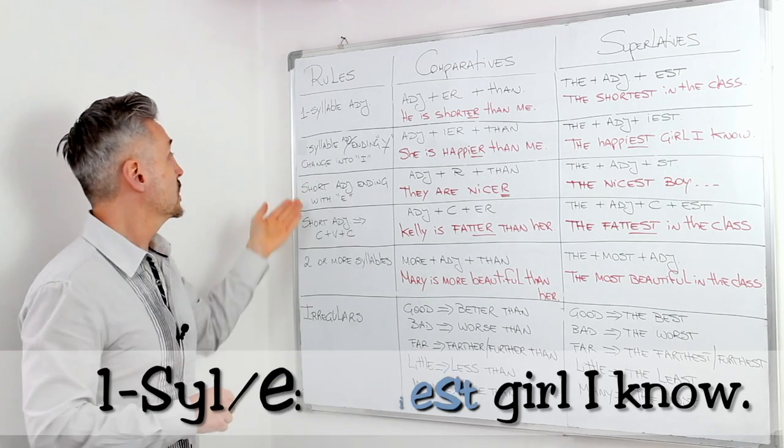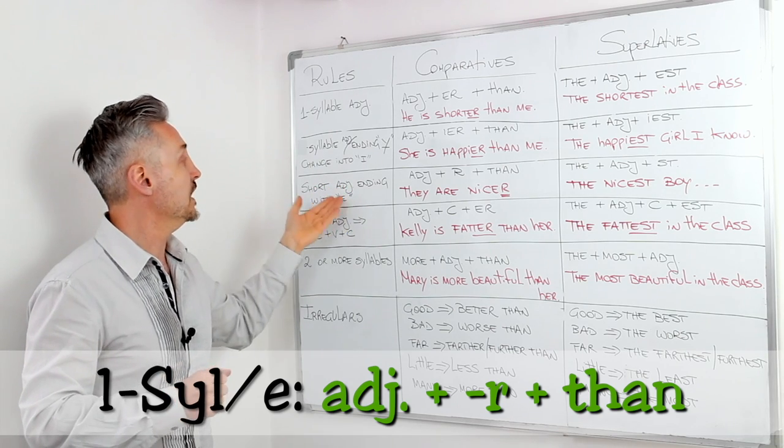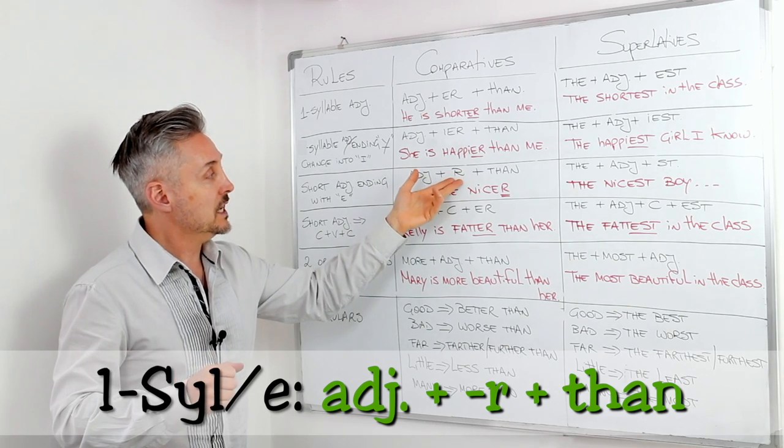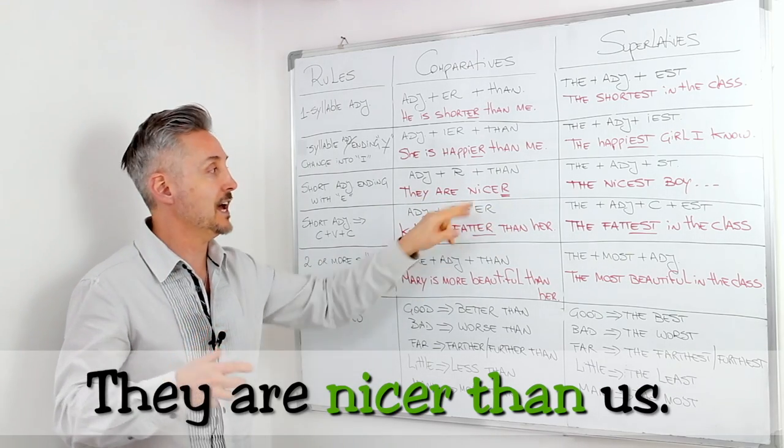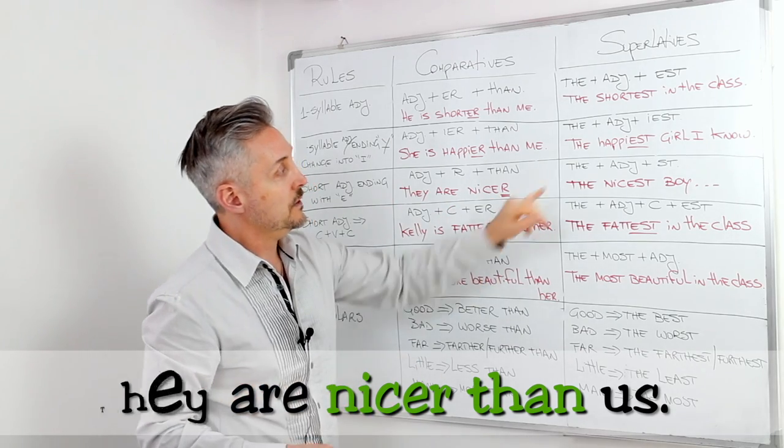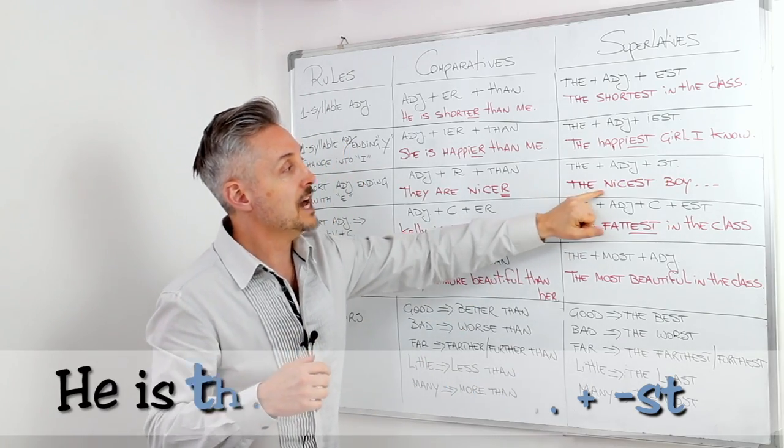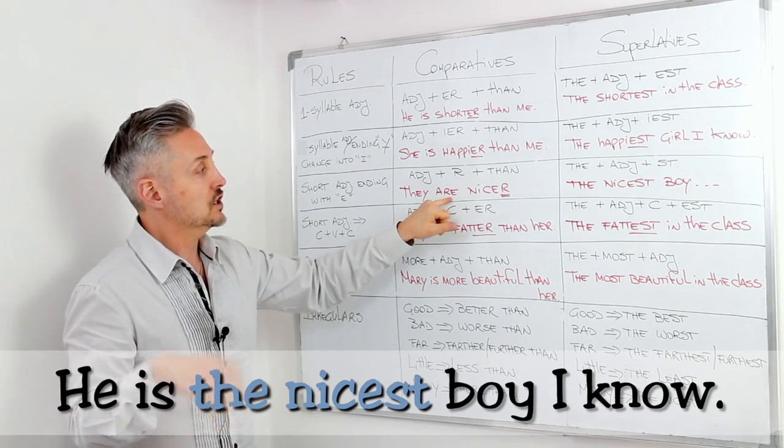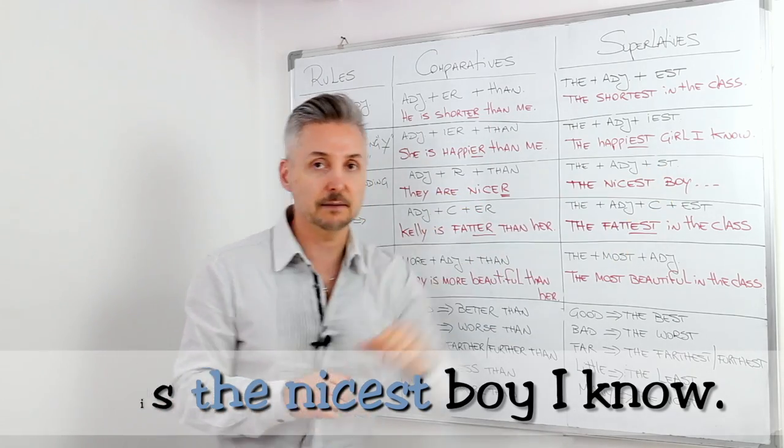The third rule, so short adjectives, one-syllable adjectives ending with e. Example, adjective plus r plus than. They are nicer. So, we don't add another e. We just add r. Then the superlative, the, plus adjective plus s-t. So, the nicest boy. We take out the e and we just leave the r in the comparative and superlative s-t.